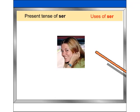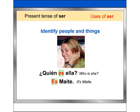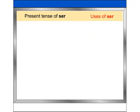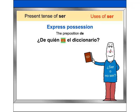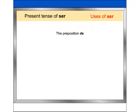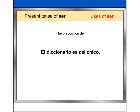Ser is used in Spanish to identify people and things: '¿Quién es ella?' 'Es Maite.' Ser is also used with the preposition de to express possession: '¿De quién es el diccionario?' 'El diccionario es de Javier.' Note that de followed by el contracts to form del: 'El diccionario es del chico.'